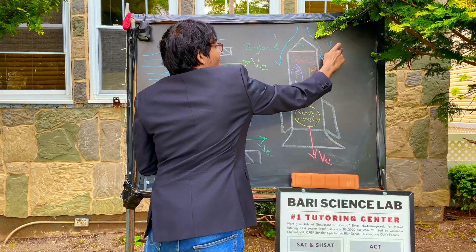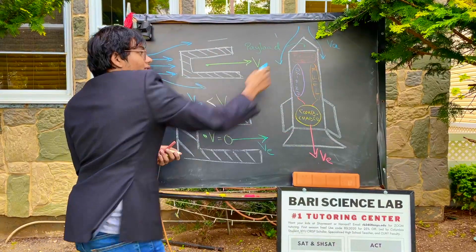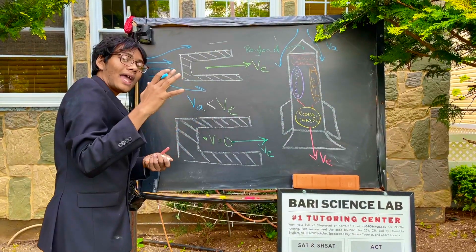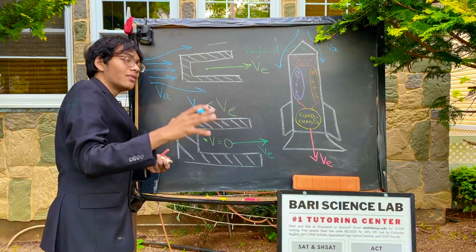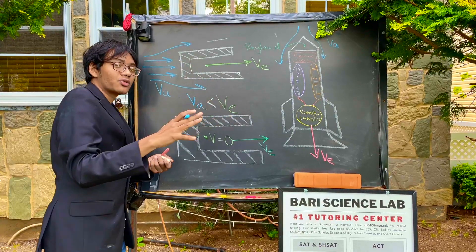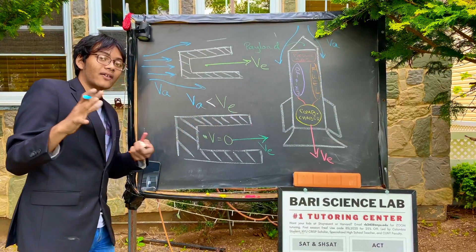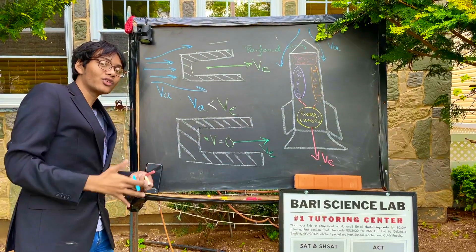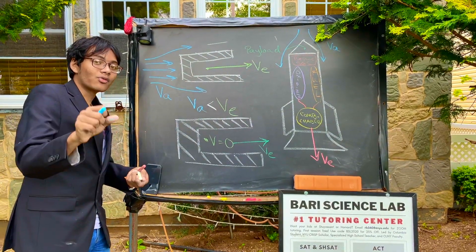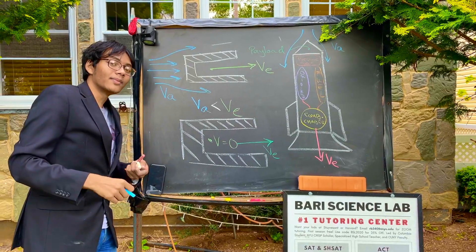So when the exhaust velocity V sub E is greater than V sub A, the rocket will have thrust which is greater than its drag. And when thrust is greater than drag, there's a net force. When there's a net force, there's a net acceleration, and the rocket will start moving.